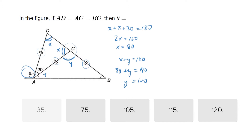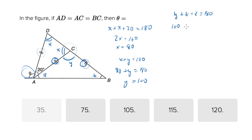We can do the same thing with the next triangle. Let's call these angles Z. This is also an isosceles triangle, which means we can add up the angles: Y plus Z plus Z equals 180. We know Y is 100, so 100 plus 2Z equals 180. Therefore 2Z equals 80, and Z equals 40.